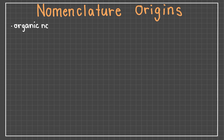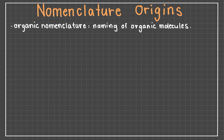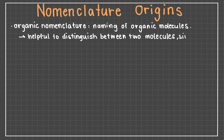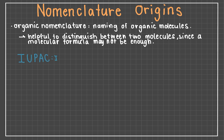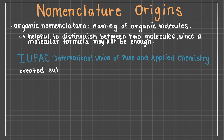Organic nomenclature, or the naming of organic molecules, is vital in distinguishing unique molecules from one another and determining constitutional isomers. A molecular formula is simply not enough to describe a compound, so that's why in 1892, the International Union of Pure and Applied Chemistry, also known as IUPAC, created the most widely used naming system in chemistry called substitutive nomenclature, or commonly called IUPAC nomenclature.